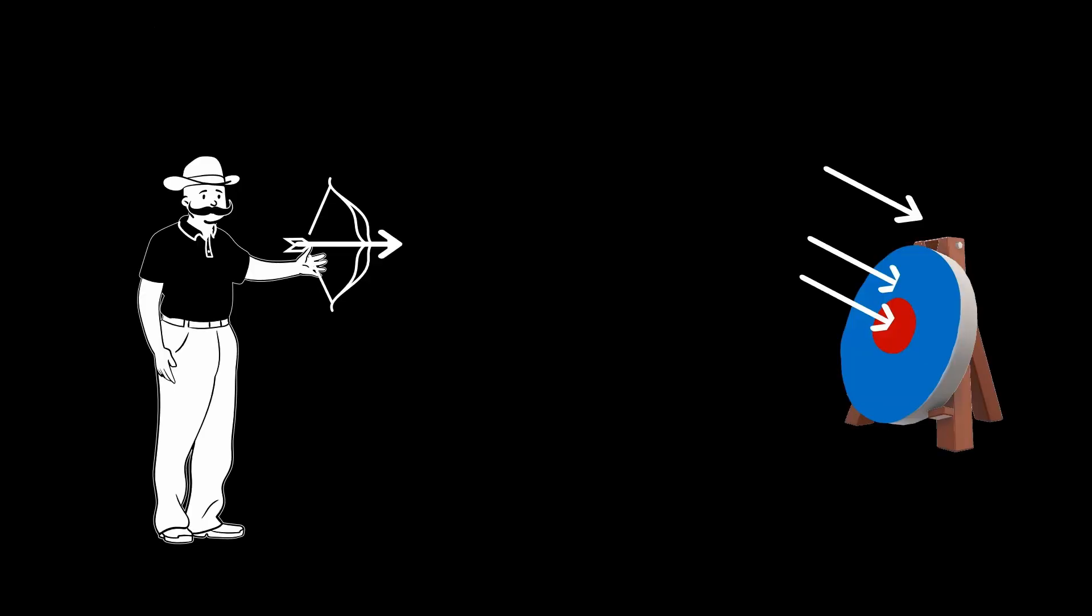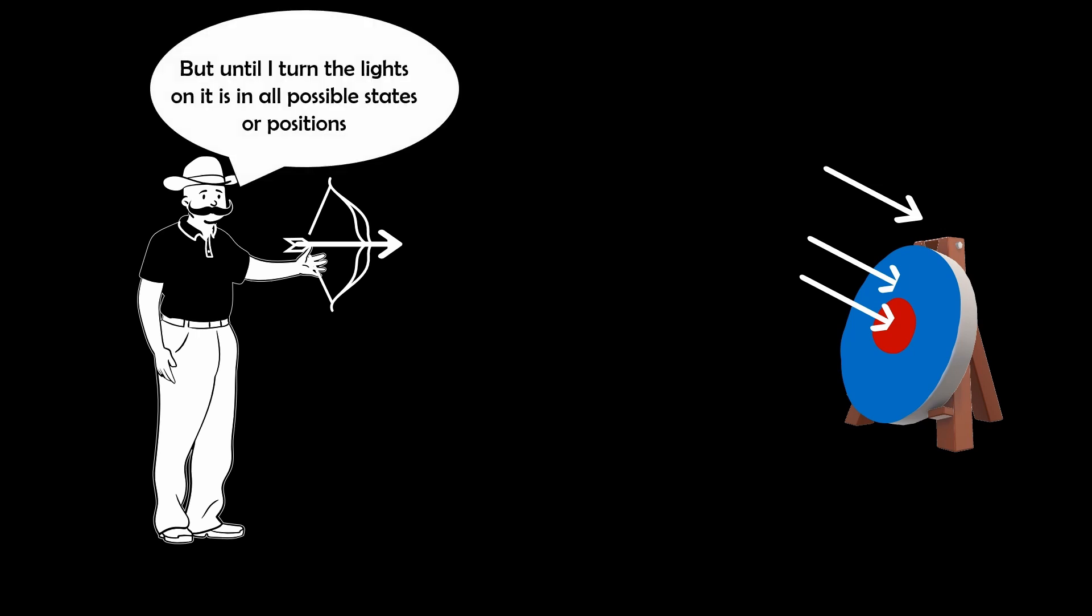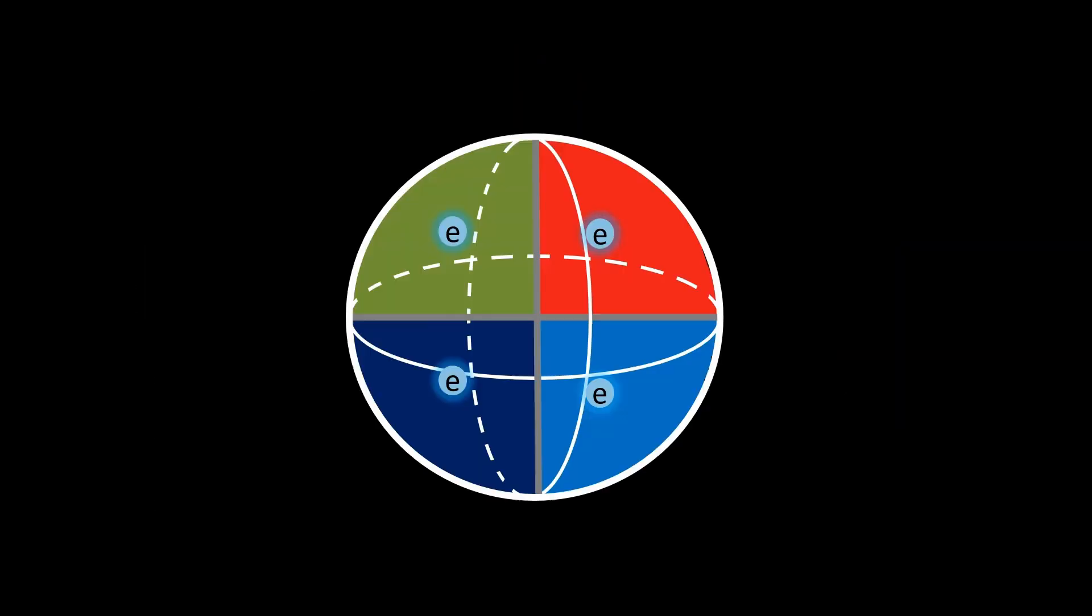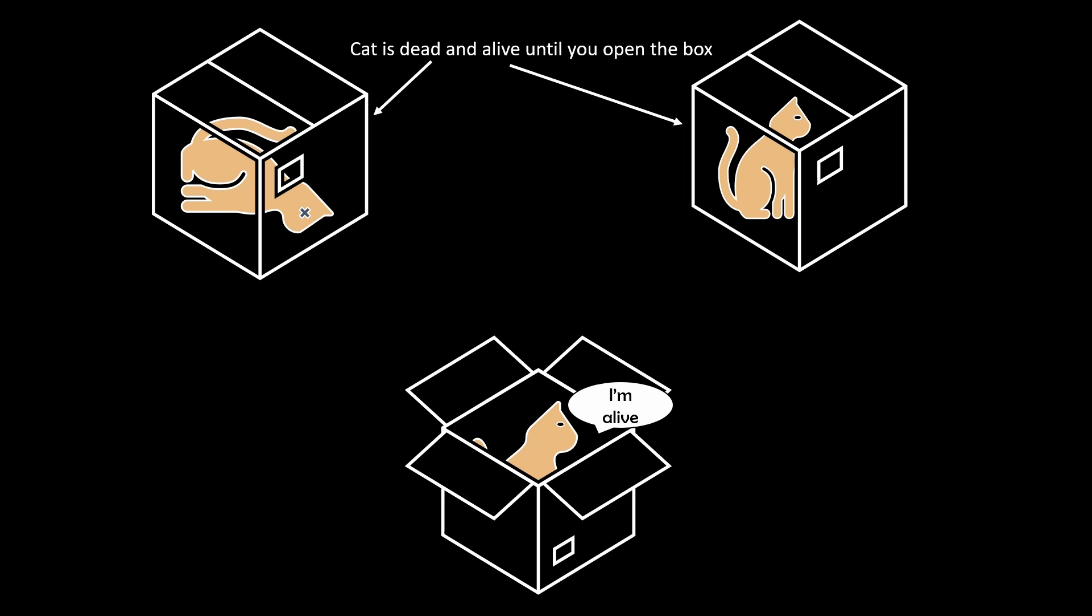But there's a twist in quantum mechanics. The electron, much like the arrow, exists in a state of superposition, meaning it's in all possible locations until we turn the lights back on and collapse it into one state. This is like Schrödinger's cat in a box, which is both dead and alive until you open the box and it chooses a state.